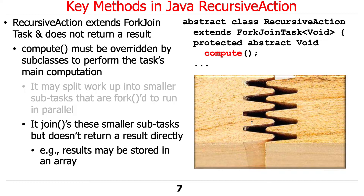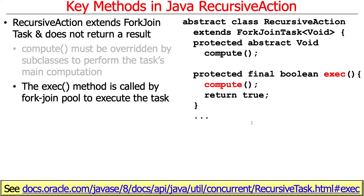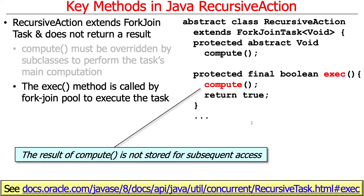The key point with compute for RecursiveAction is there is no return value. So if there are results that need to go somewhere, they typically have to be stored in some other way, like in an array visible to the RecursiveAction. Under the hood, there's an exec method called by the fork-join pool. Exec is final — it has one and only implementation — and when it's called by the framework, it calls compute. Notice this method does not store the result anywhere, since compute is void, which is what you need with RecursiveAction.